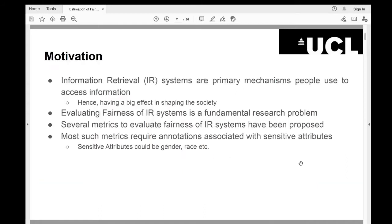Information retrieval systems are primary mechanisms people use to access information. Therefore, they have a big effect in shaping society from the perspective of accessing information. Evaluating fairness of IR systems is a fundamental research problem. Therefore, several metrics to evaluate fairness of IR systems have been proposed in literature. Most of these metrics require annotations associated with sensitive attributes. Sensitive attributes could be either gender or race, etc.